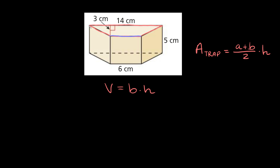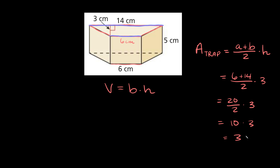So we have the short base and the long base, and h is the height of the trapezoid, which is given right here as 3 centimeters. So the area of the trapezoid is equal to — we add the bases together. The length of one base is 6 centimeters, so a is 6, and then b is this long one, given as 14. So 6 plus 14 over 2 times the height of 3: 6 plus 14 is 20, so we get 20 divided by 2 times 3, which is 10 times 3, equal to 30. And our units are centimeters squared.